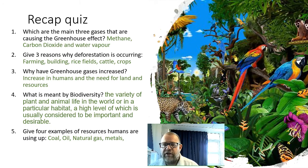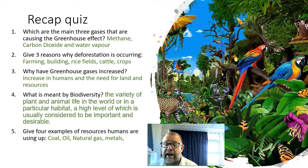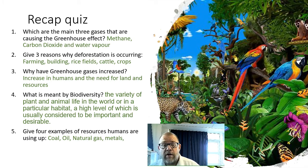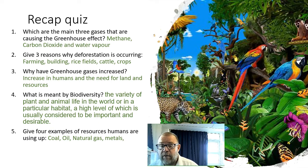Give three reasons why deforestation is occurring — that's one of the last lessons we looked at. We've got farming for agriculture, cattle and other livestock, rice fields and paddy fields, and also buildings, as well as all the resources that come from that: the wood, the paper, all those things.